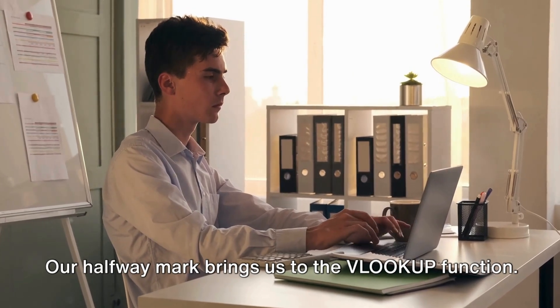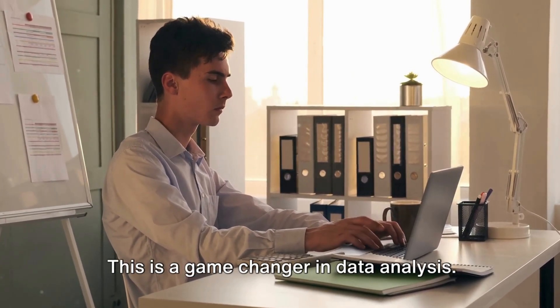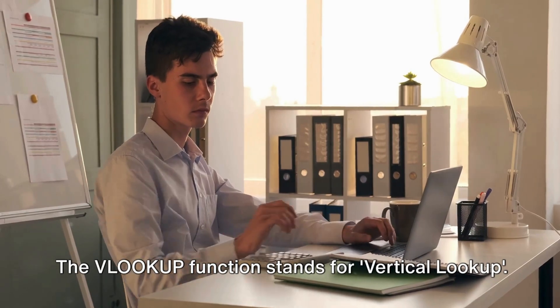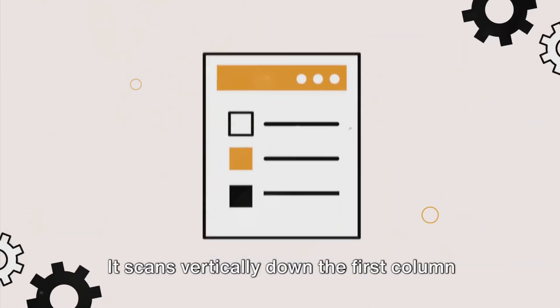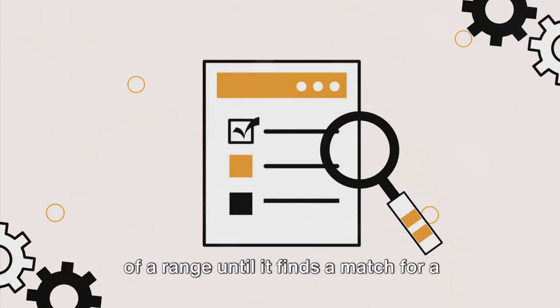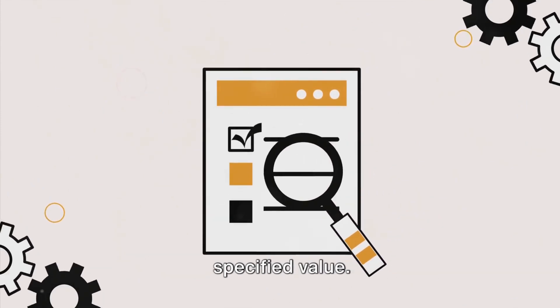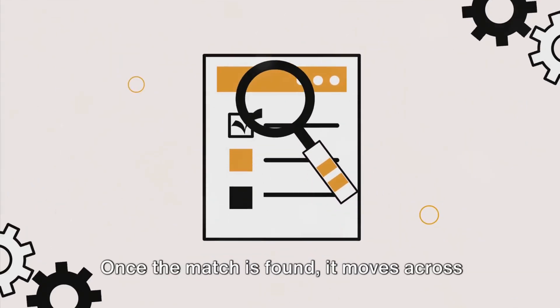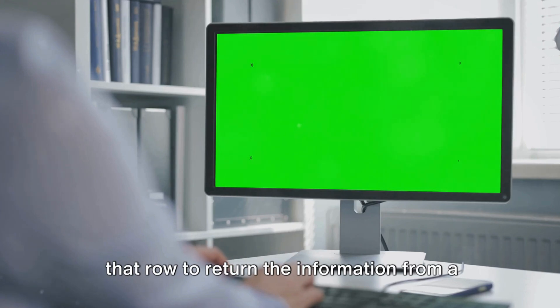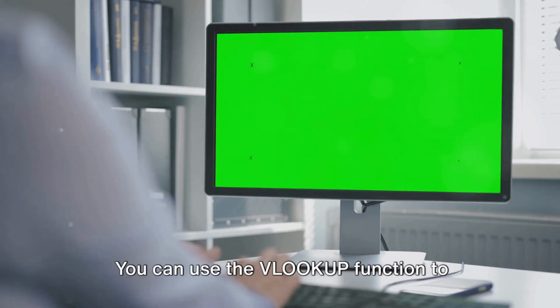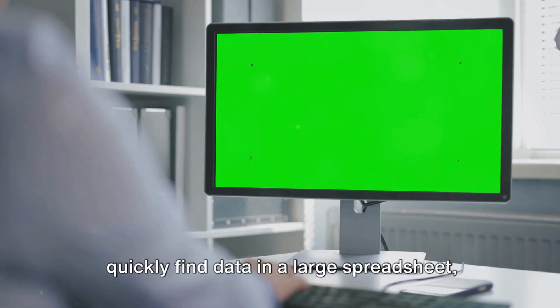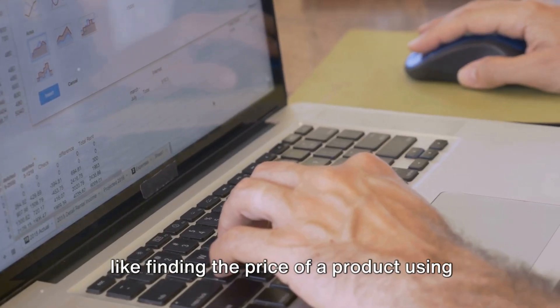Our halfway mark brings us to the VLOOKUP function. This is a game changer in data analysis. VLOOKUP stands for vertical lookup. It scans vertically down the first column of a range until it finds a match for a specified value. Once the match is found, it moves across that row to return the information from a specified column.